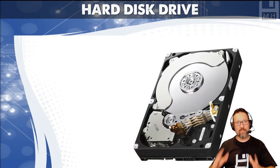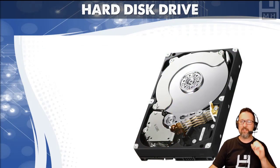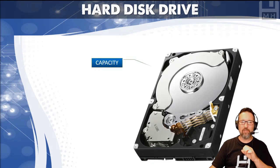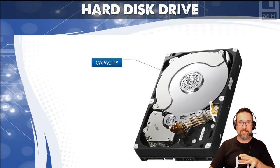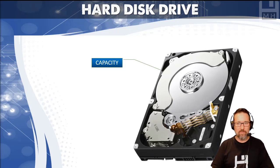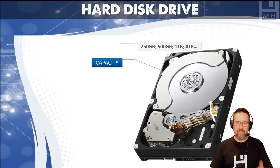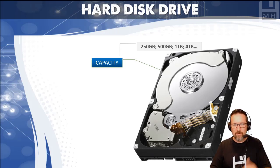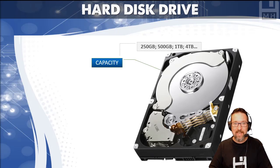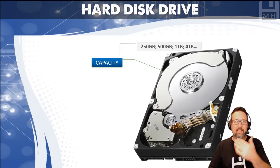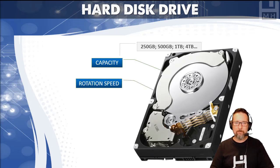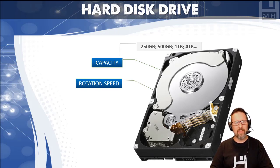Okay, hard disk drive. If you want to get a hard disk drive, you need to know some of the specs of an HDD. First, like RAM, we look at capacity — how much data can we put onto the hard disk drive. We have capacities like 250 gigabytes, 500 gigabytes, one terabyte for mid-range laptops, and four terabytes and beyond as technology improves.